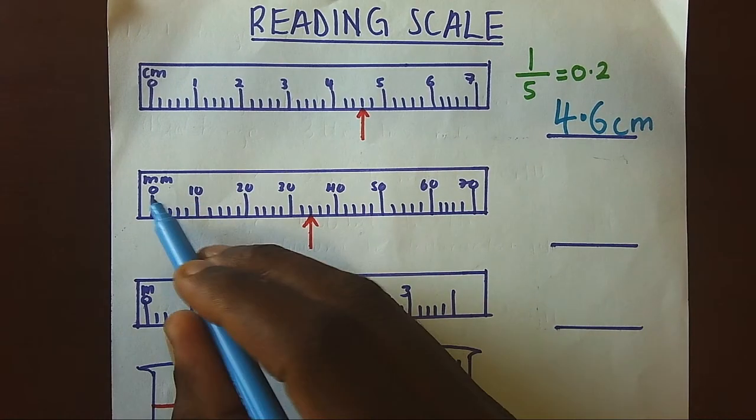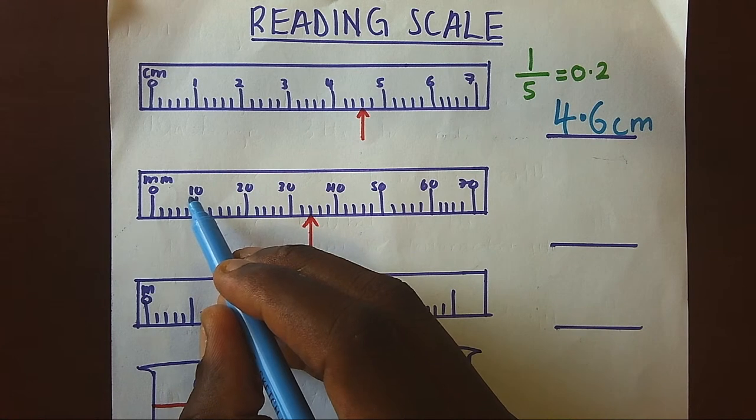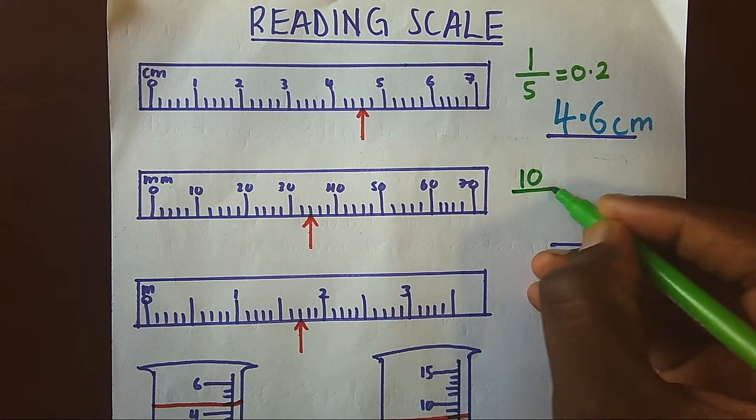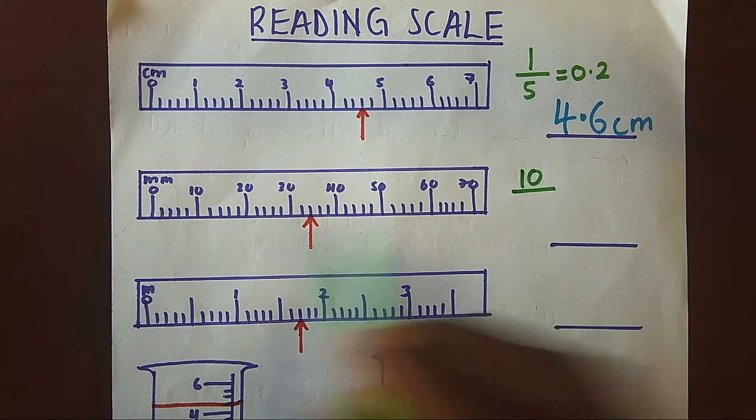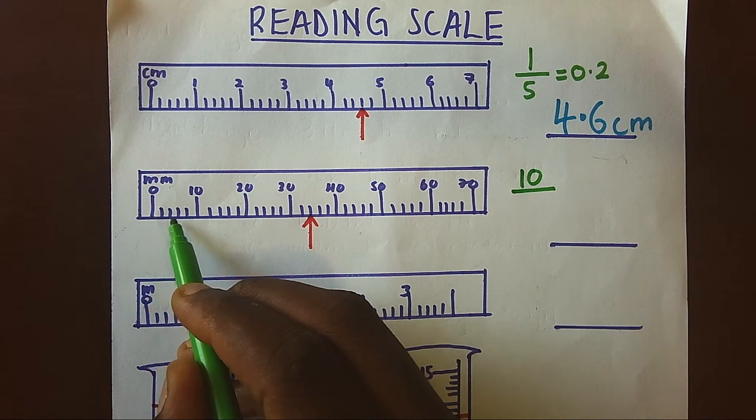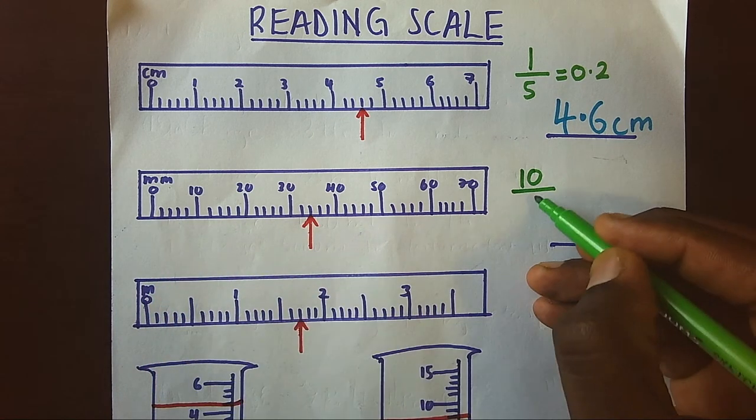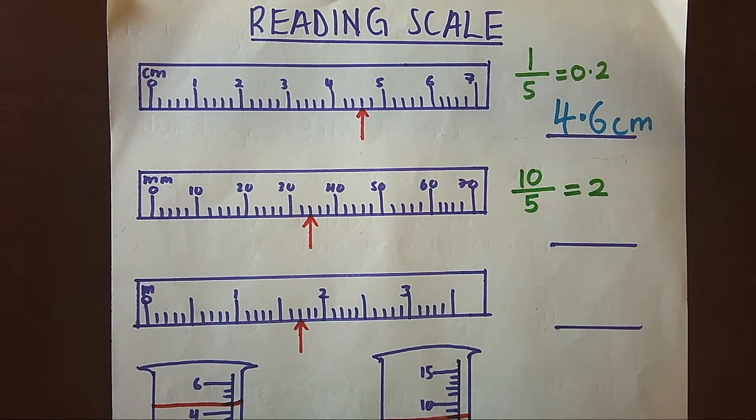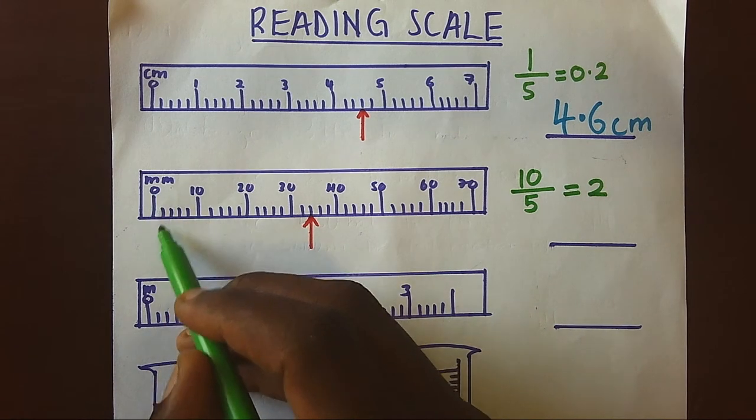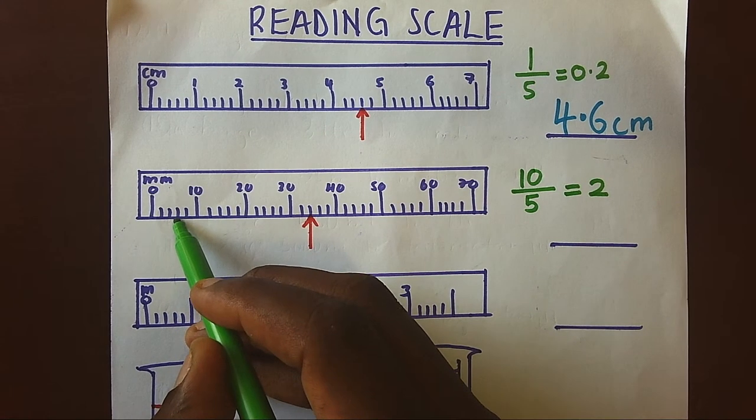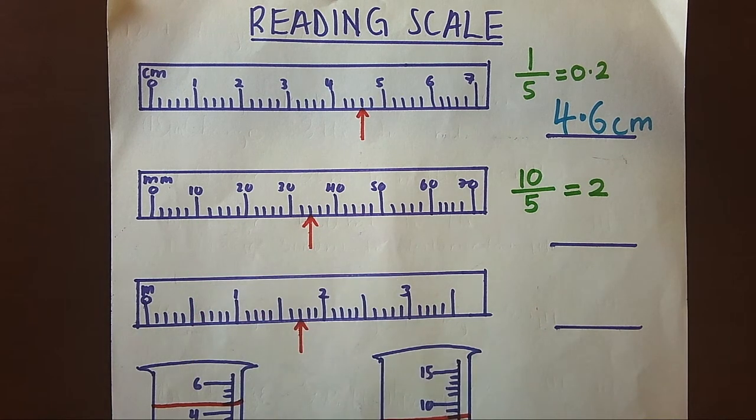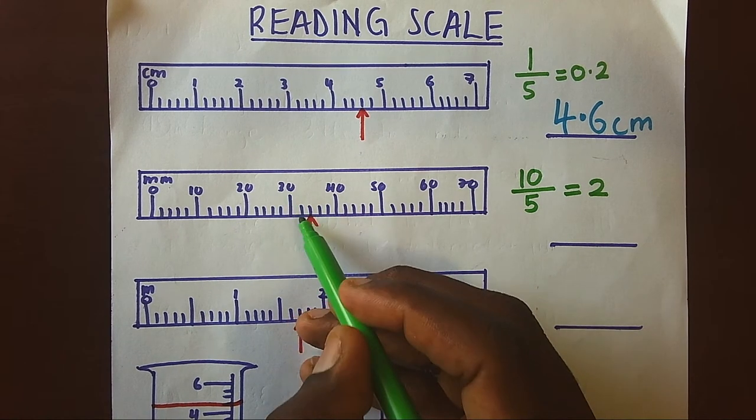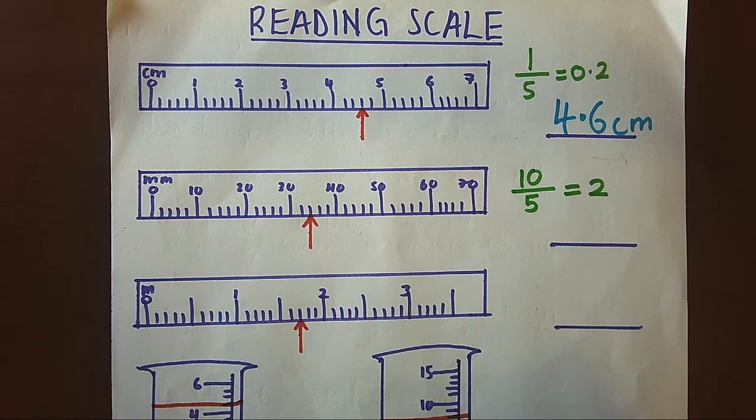Let's look at the second one. If we look from one main value to another is 10, that means we shall have units 10 divided by the spaces. According to here we have one, two, three, four, five spaces. That means for each space we have two units, hence zero, two, four, six, eight, ten.